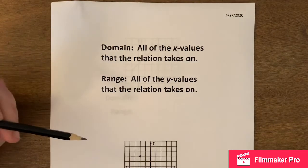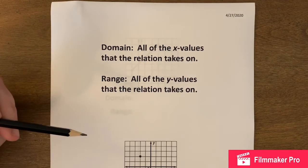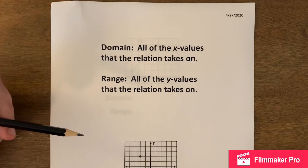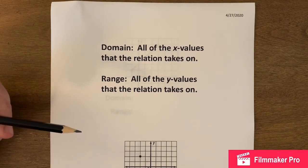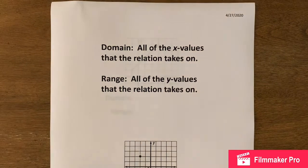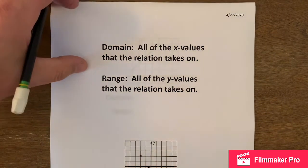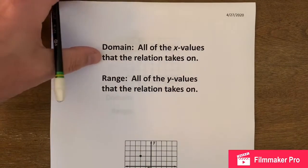Some relations and functions have no problem — it's all real numbers. Others are not as fortunate. You have to look at it and take values out or see if there's a span of values that won't work. So let's take a look at some examples.